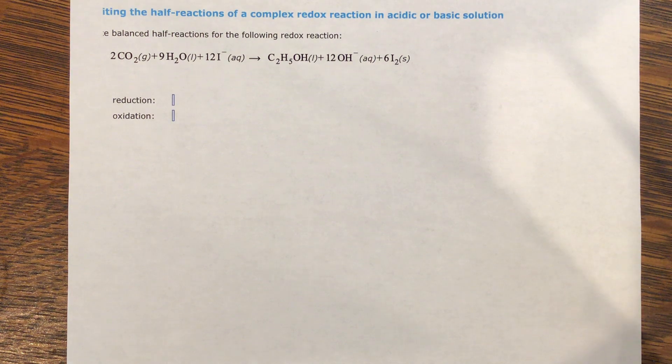Welcome back. This is an Alex training video on writing the half reactions of a complex redox reaction in acidic or basic solution. They're going to give you a balanced, a full balanced equation, and you're going to have to pull out what parts are being reduced and what parts are being oxidized. And remember, in the half reaction, you also need to include the electrons that have been transferred. Where are they?